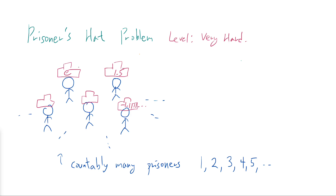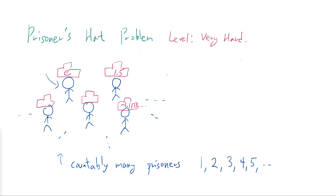Every prisoner — say for this prisoner — he or she can see all the other numbers. So this person can see 1.5, negative 1.1 repeating, but this person does not know what number is written on top of his or her own head. What the prisoners have to do is guess what number is written on top of their head, all at the same time. That's the key part: everyone has to guess exactly at the same time, so everyone is going to shout out a number. If you shout out the correct number, you get it right; otherwise you're wrong.